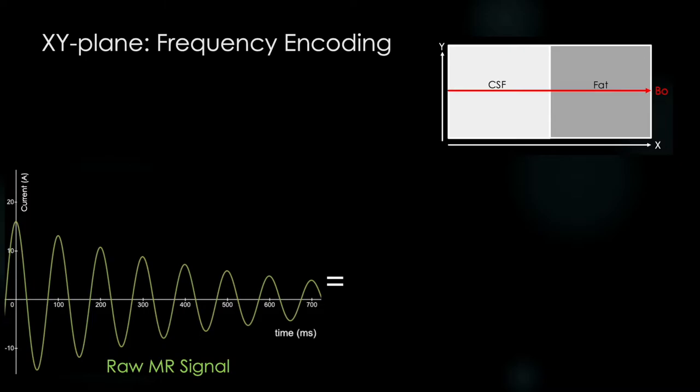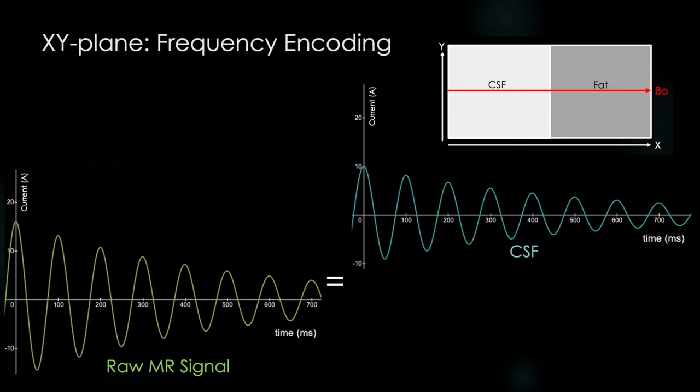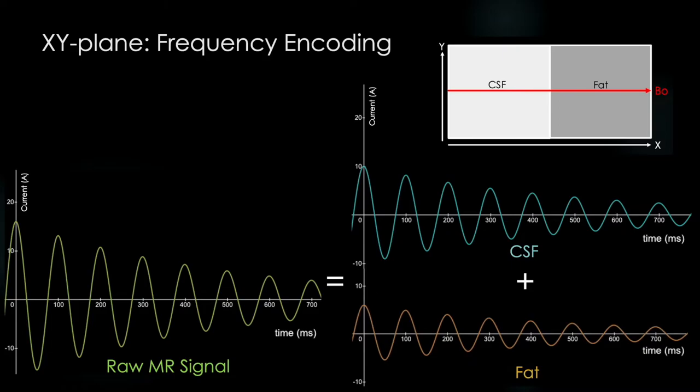We know the raw signal our machine records will be whatever the signal coming from the voxel containing CSF is plus the voxel containing fat. So what is the Larmar frequency of the voxel containing CSF? The gyromagnetic ratio times the magnetic field, in this case B0. This will produce a T2 decay curve that looks like this. And what is the Larmar frequency of the voxel containing fat? It's also experiencing a magnetic field of B0, so it will produce a very similar looking T2 decay curve with the exact same frequency as the CSF voxel, only differing in amplitude.